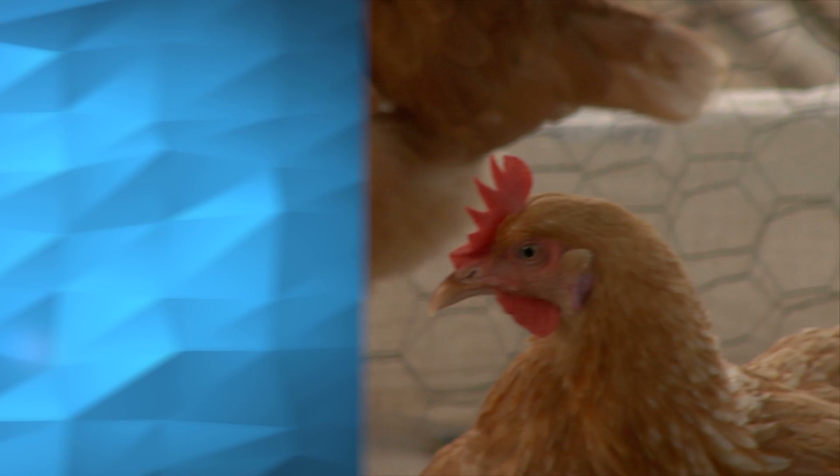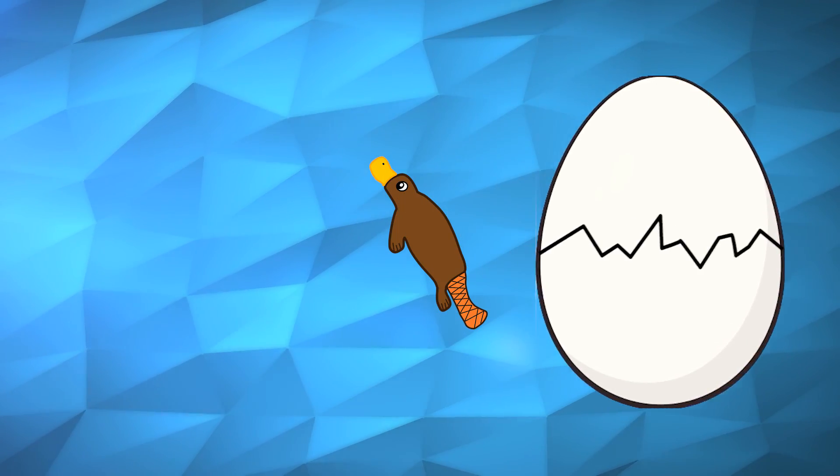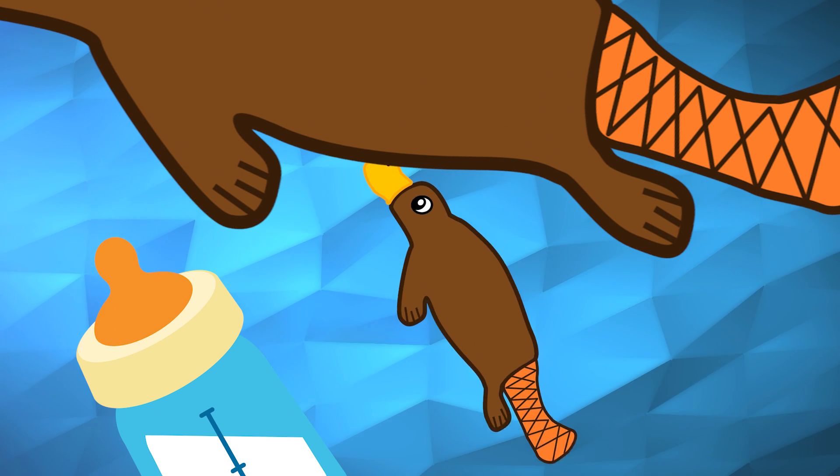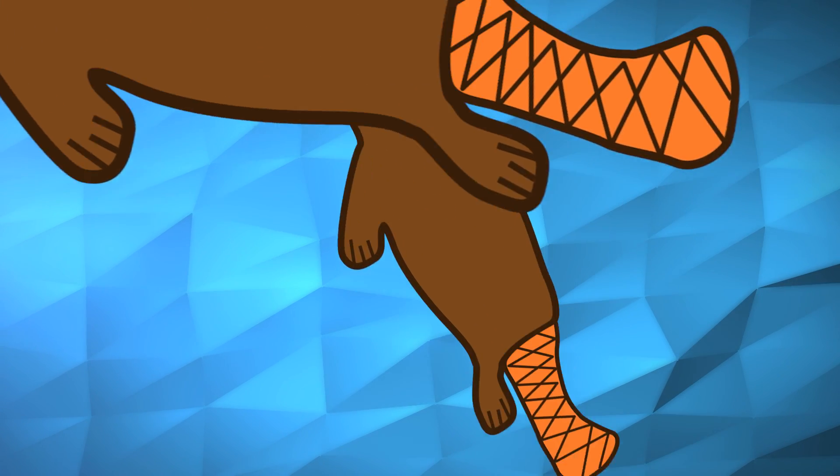The eggs take 10 days to hatch, with the babies only being the size of a small lima bean when they come out, after which the mother nurses its young for 3-4 months until they can swim on their own.